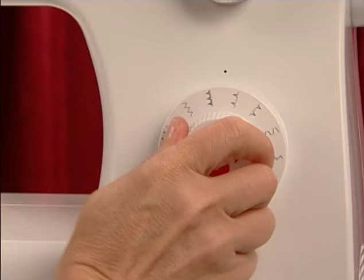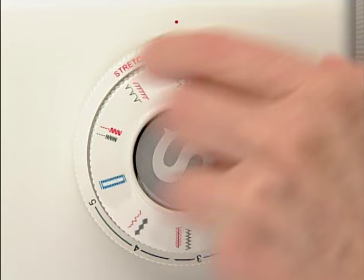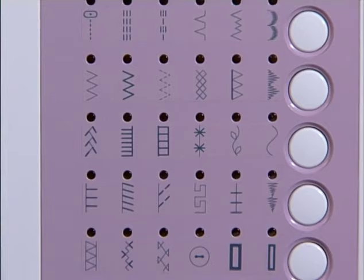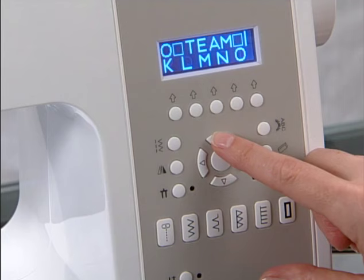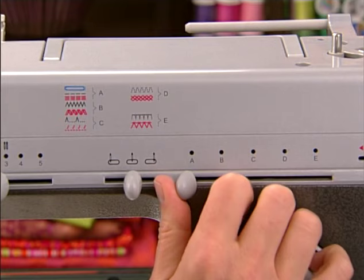Sewing machines have a selection of stitches from which to choose. Some machines are designed to sew only basic stitches, while others add a selection of stretch stitches and decorative stitches. Some electronic or computerized models may also offer alphanumeric patterns for sewing letters and numbers. On mechanical machines, stitches are selected by moving a lever or dial.